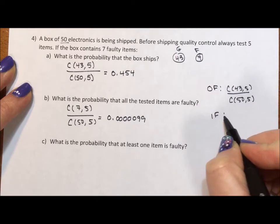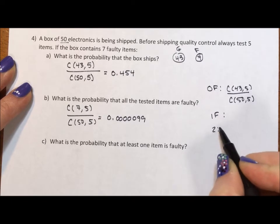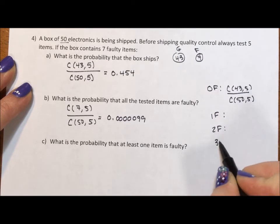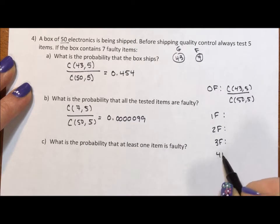We could have 1 faulty. We could have 2 faulty. We could have 3 faulty, 4 faulty, or 5 faulty, which we've done this calculation.